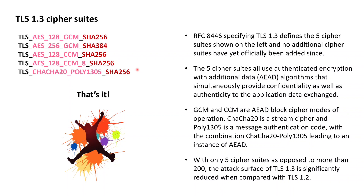TLS 1.3 thoroughly cleaned up on the number of cipher suites, which may make it slightly less flexible than TLS 1.2 with its 200-plus cipher suites, but with this thorough cleanup and a total of only five cipher suites, TLS 1.3 has managed to significantly reduce its attack surface when compared with TLS 1.2.